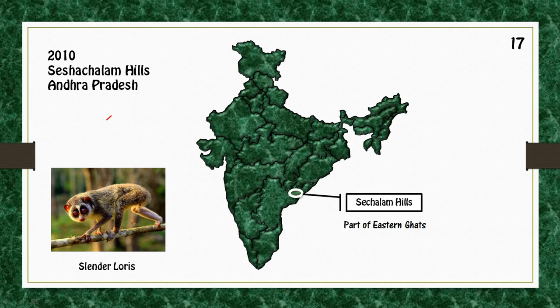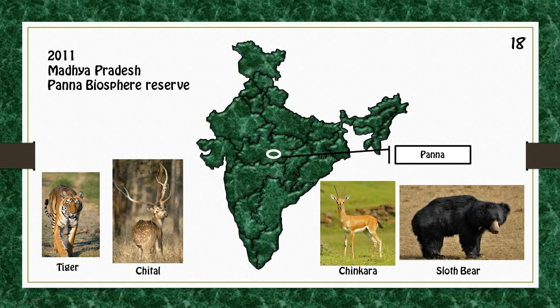In Andhra Pradesh we have Seshachalam Hills; key fauna include Slender Loris. The last one is Panna biosphere reserve in Madhya Pradesh; key fauna include Tiger, Chital, Chinkara, and Sloth Bear.